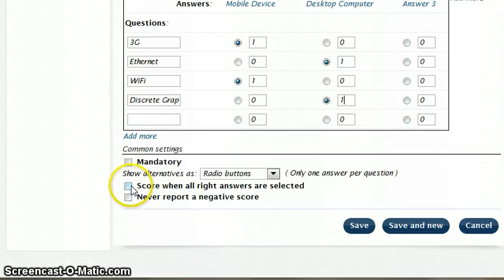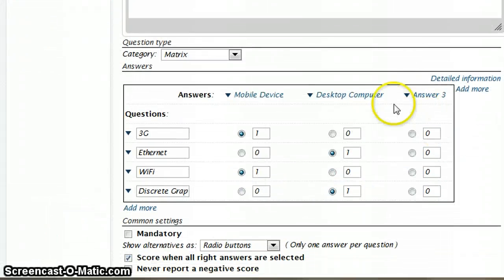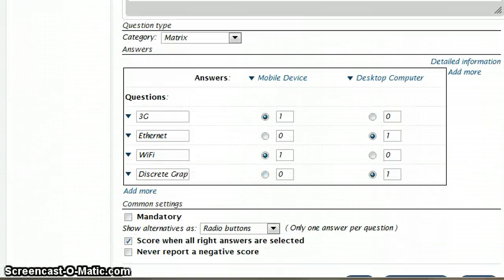At the bottom here, I'm going to say score when all answers are selected. And then I'm just going to save this question, and that's saved. OK, so once I've clicked on saved, I've got a little triangle which I can click on and then select delete. So I've deleted the third answer there.